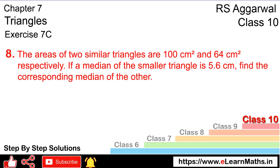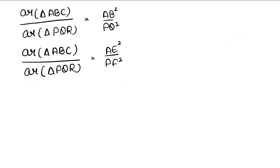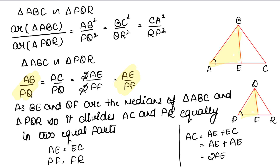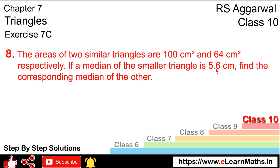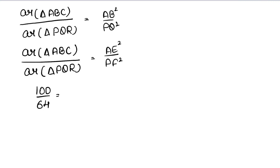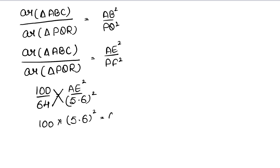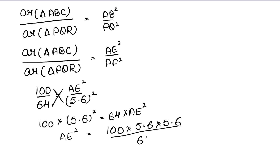Area of triangle ABC = 100 and area of triangle PQR = 64. The median of the smaller triangle PQR is PF = 5.6 cm, and we need to find AE. So: 100/64 = AE²/5.6². Cross-multiplying: 100 × 5.6² = 64 × AE². Therefore AE² = (100 × 5.6 × 5.6)/64 = 49, so AE = 7 cm.